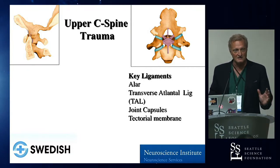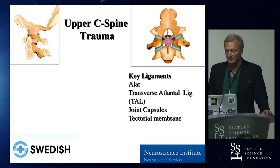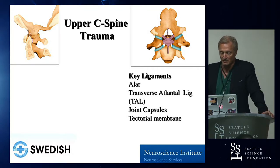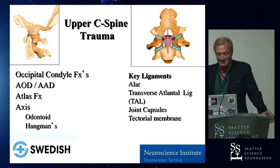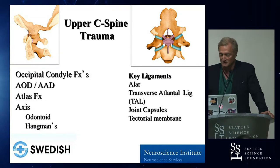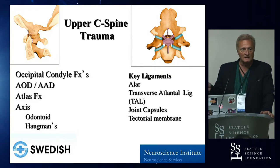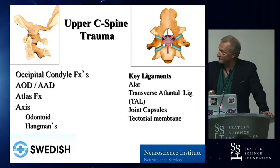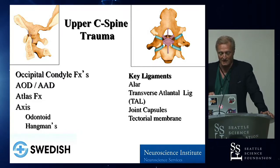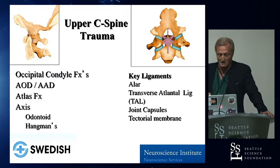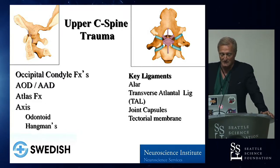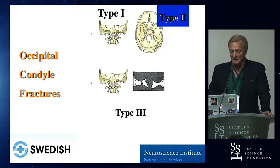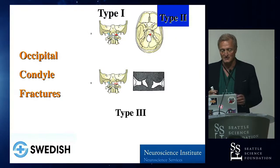The upper cervical spine is an amazing and intricate functional unit of three main bony elements: the occiput, C1, and C2, interwoven through several key ligaments. You've seen a beautiful lecture from Dr. Tubbs this morning, so I won't repeat all these things — but these are the classic key ingredients that keep these together.